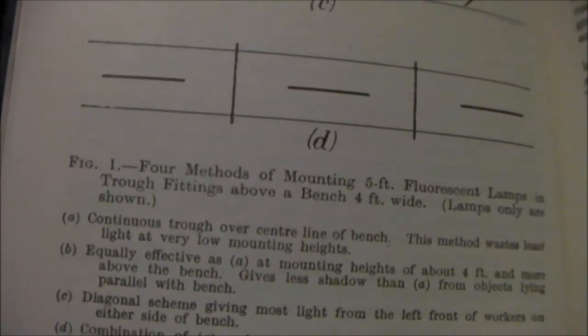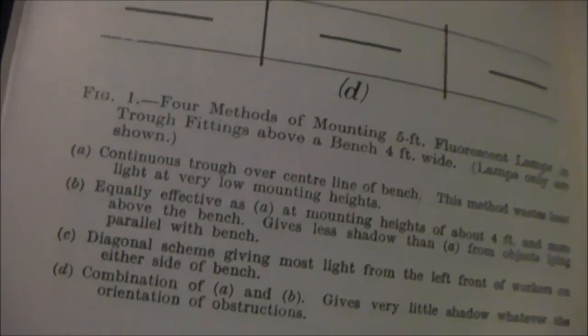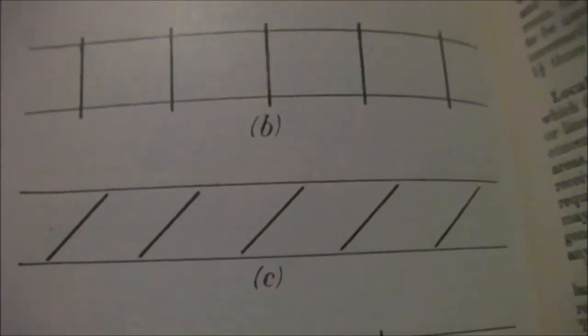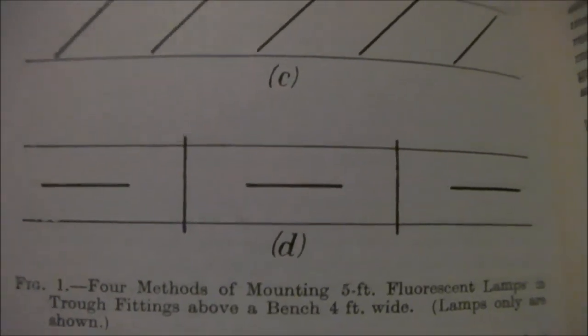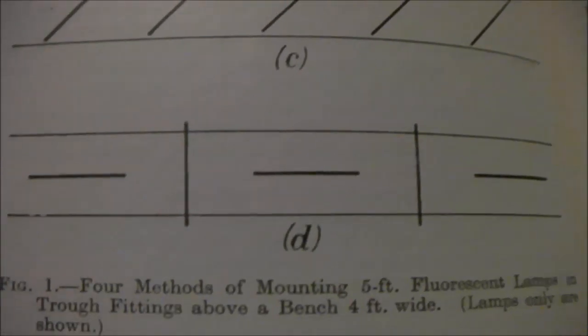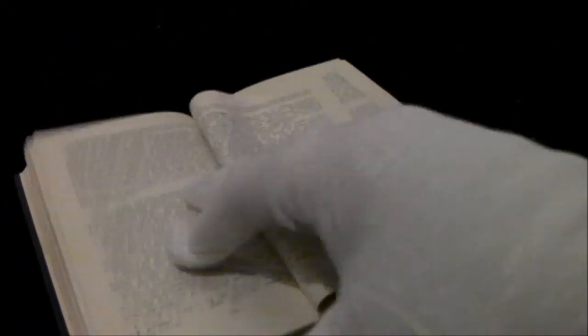Four methods of mounting five foot fluorescent lamps. A, continuous trough over centre line of bench. Okay. B is train tracks. A is a road. B is train tracks. C is train tracks for drunk people. And D is someone who's got the point completely missed. You have to have either train or road. You can't have both. It's cheating against the rules. It can cause flattenment.